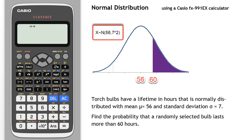Welcome to the second of three video clips illustrating the normal distribution functions of the Casio ClassWiz calculator. In this clip we will find the probability in the tail end of a normal distribution.